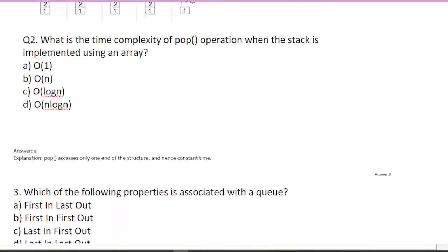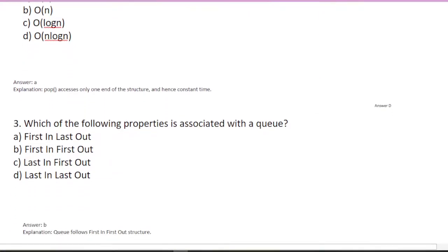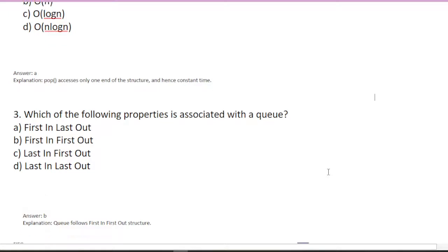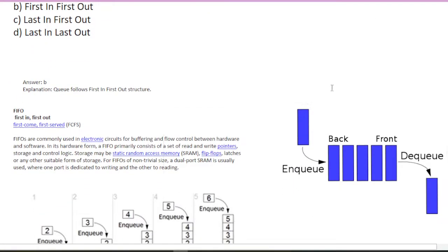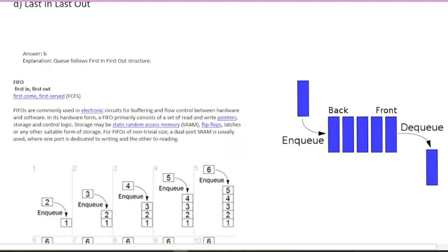Now we will come to queue. Which of the following properties is associated with queue? First we will understand what is queue. This type of structure given is queue. One end we are pushing things and from one end we are taking out.